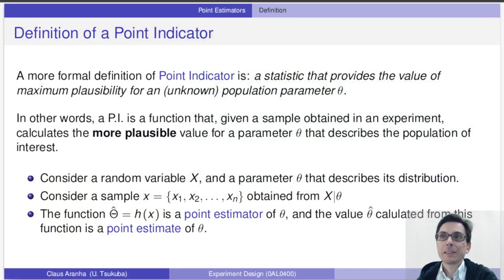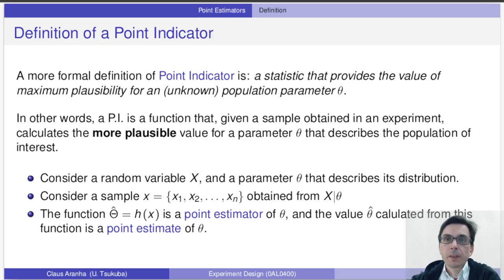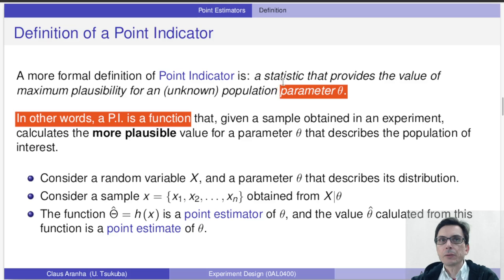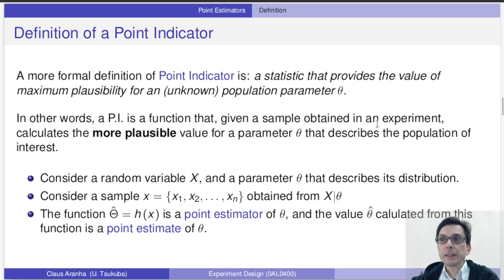In the last video we explained that a statistic is a function calculated from experimental data. A point indicator is a type of statistic. Formally, we say that a point indicator is the statistic that provides the value of maximum plausibility of a given population parameter.